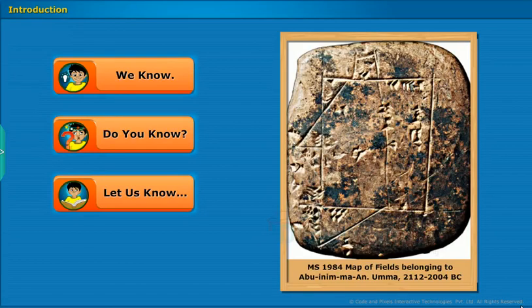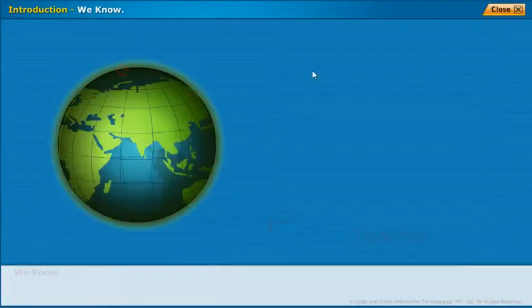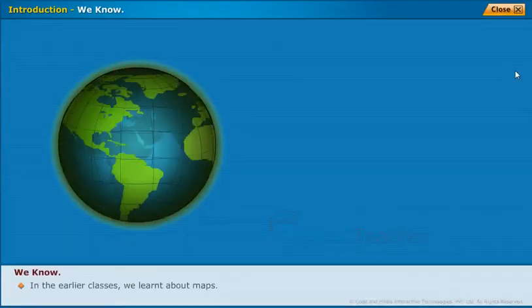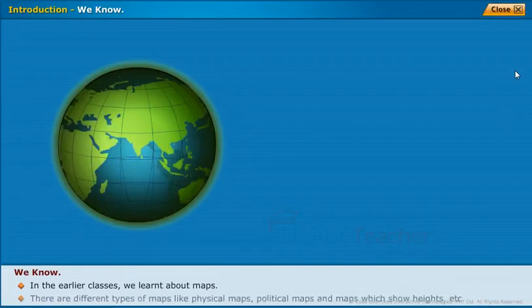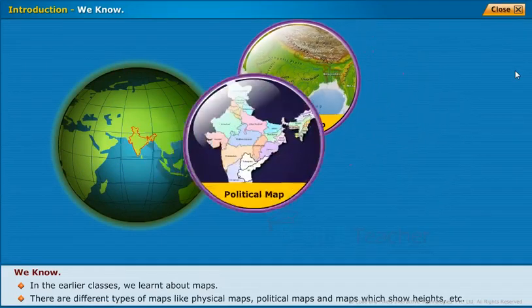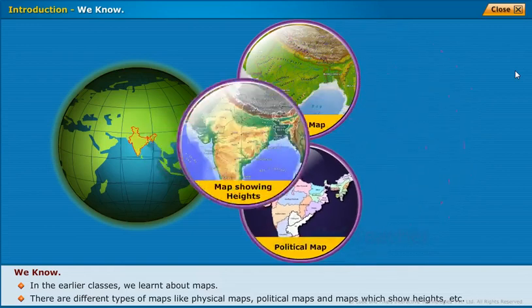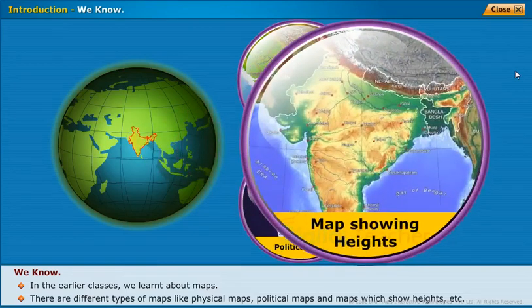Introduction. Before entering into the chapter, follow the instructions shown on the screen. Click each tab to know more. We know that in the earlier classes we learned about maps. There are different types of maps, like physical maps, political maps, and maps which show heights, etc.